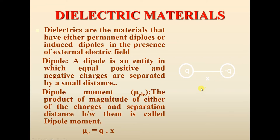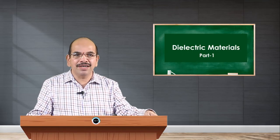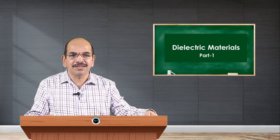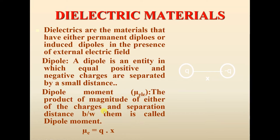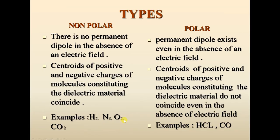A dipole is characterized by its dipole moment. Dipole moment is the product of the magnitude of either of the charges and the separation between them. Here the charge is either +q or -q, and the separation is x, therefore the dipole moment μ = q × x. Larger the strength of the charge or larger the separation, more is the dipole moment.